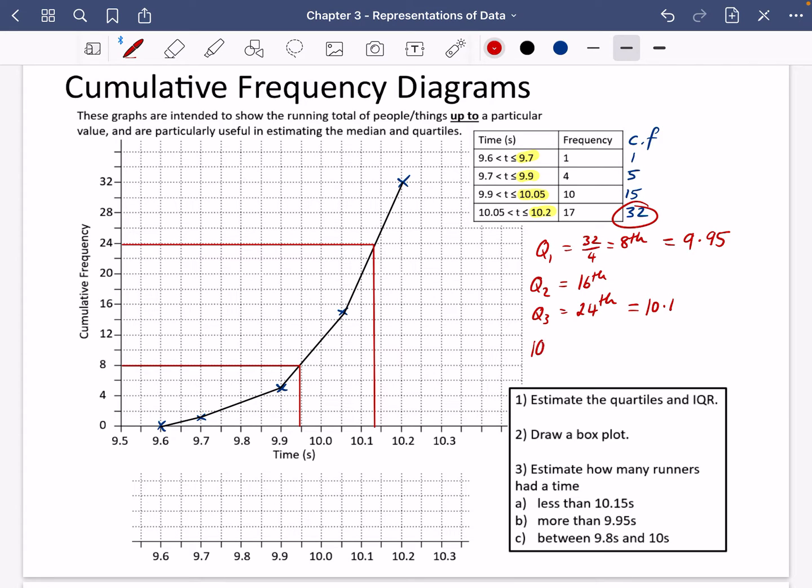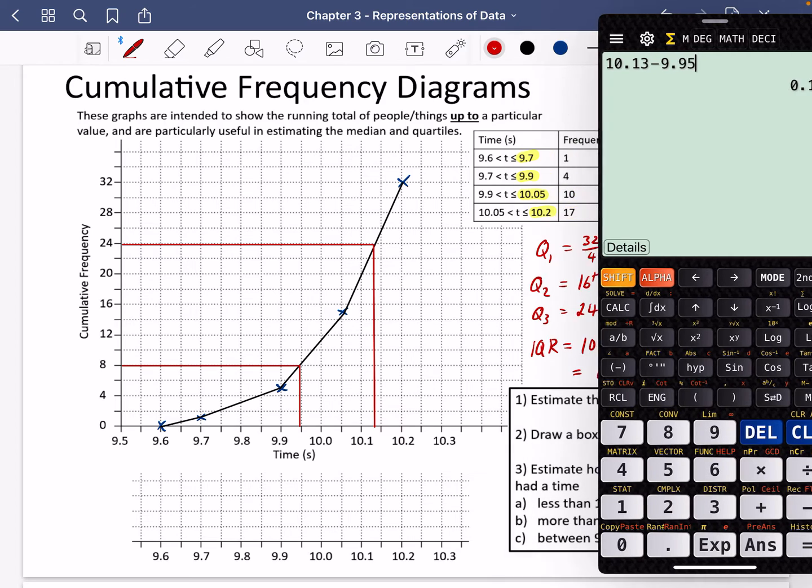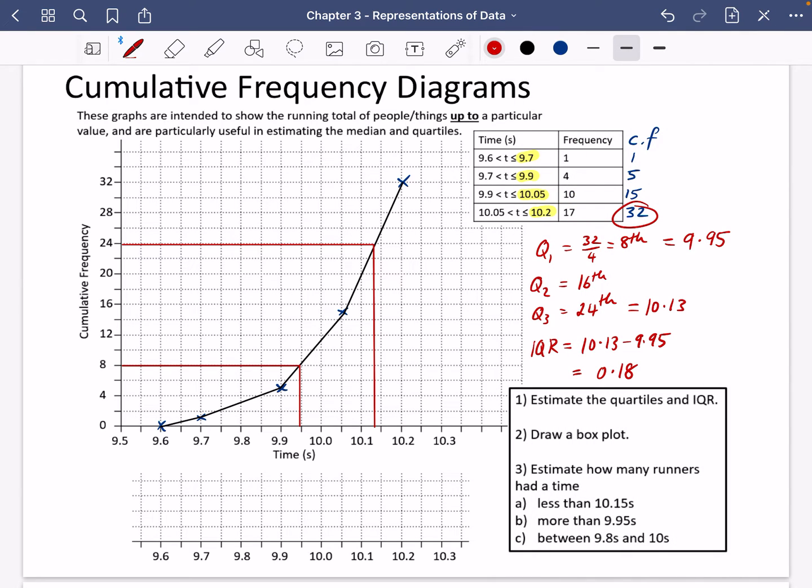So let's do an estimate for the interquartile range. That would be 10.13 minus 9.95, which is going to be 0.18. I'm just going to double check that. Yep, we've got 0.18 for the interquartile range.